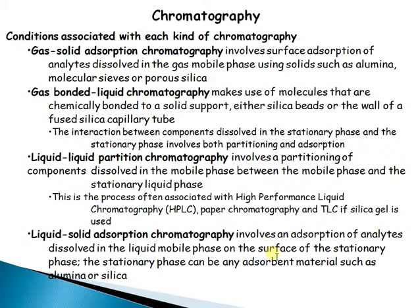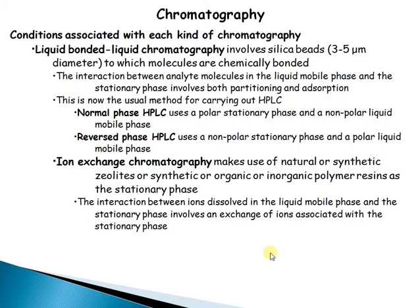Liquid-liquid partition chromatography involves the partitioning of components between the mobile phase and a liquid stationary phase. This is the process associated with high performance liquid chromatography (HPLC) and paper chromatography. If silica gel is used, it becomes liquid-solid adsorption chromatography. The analytes from the liquid mobile phase adsorb onto the stationary phase surface, which can be carbon or silica. Liquid-bonded chromatography uses silica beads 3 to 5 micrometers in diameter to which molecules are chemically bonded, with interactions involving both partitioning and adsorption. This is now the usual method for carrying out HPLC.